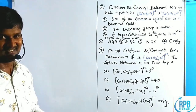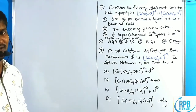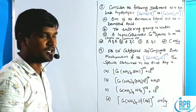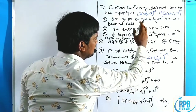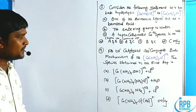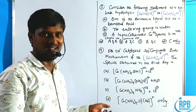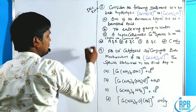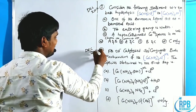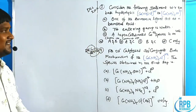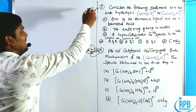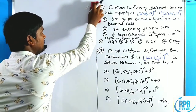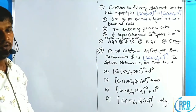Question number 4 is similar: for the OH⁻-catalyzed SN1 conjugate base mechanism of [Co(NH3)5Cl]²⁺, what is the species obtained in the first step? This is a December 2017 question; question 3 is December 2016. Both are four-marker questions in CSIR and are very common.